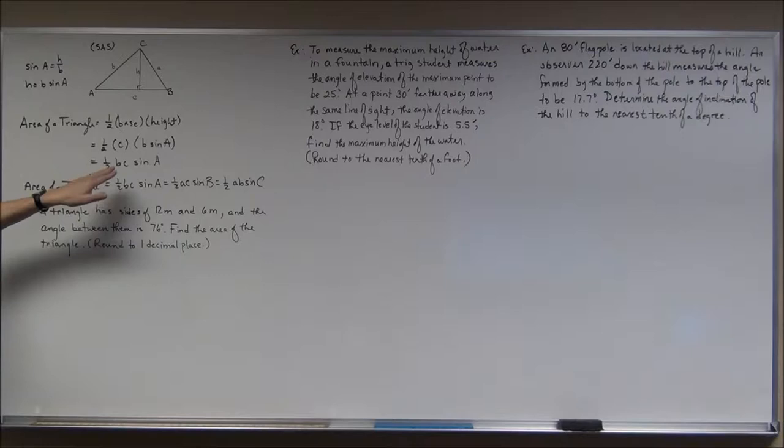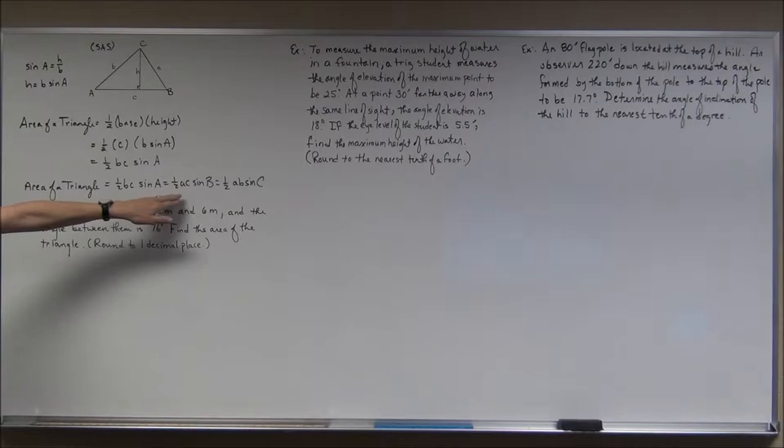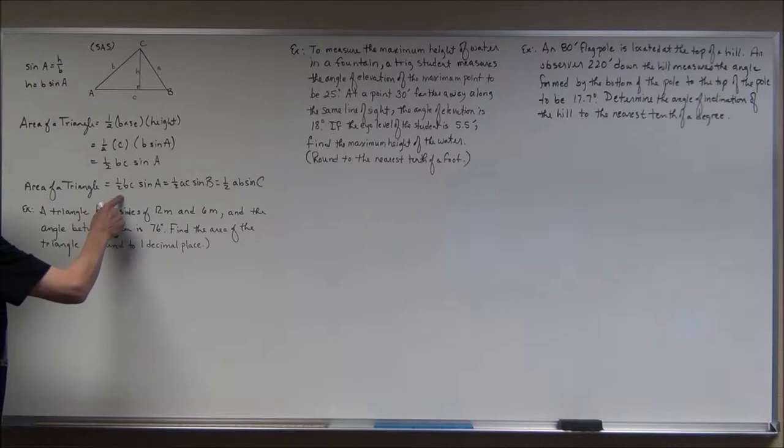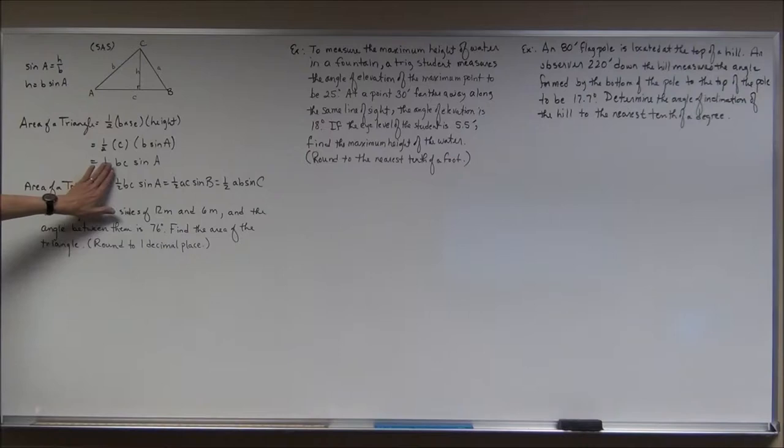It doesn't have to be B and C and angle A specifically. You can find the area of a triangle as: one-half · B · C · sine(A), or one-half · A · C · sine(B), or one-half · A · B · sine(C). Just remember: it's one-half times one side, times another side, times the sine of the included angle, and you'll be golden.